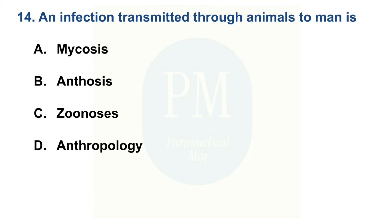An infection transmitted through animals to man is: Option A: Mycoses. Option B: Anthosis. Option C: Zoonosis. Option D: Anthropology. The correct option is Option C — Zoonosis.